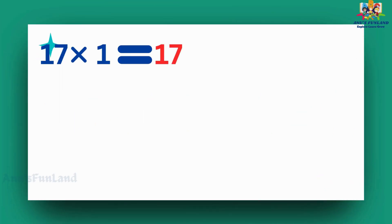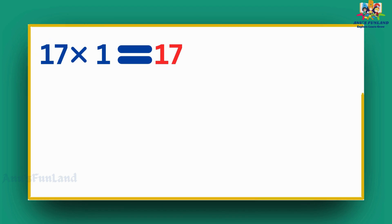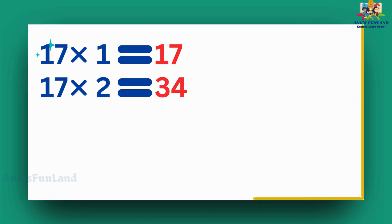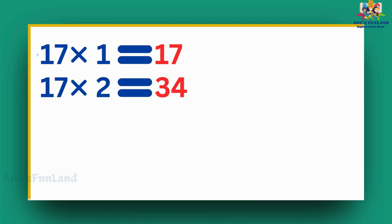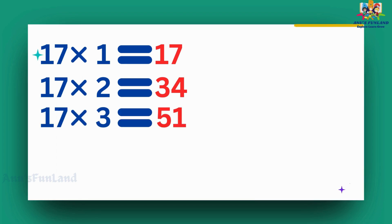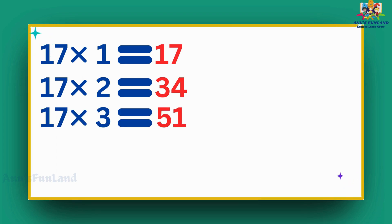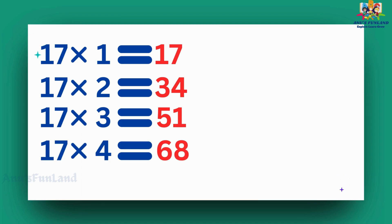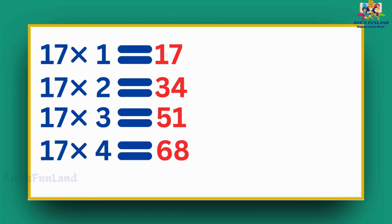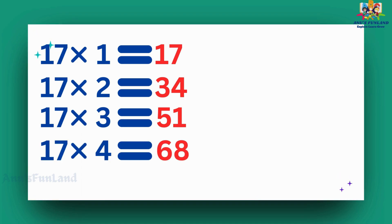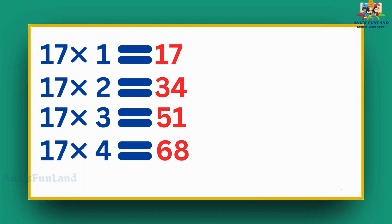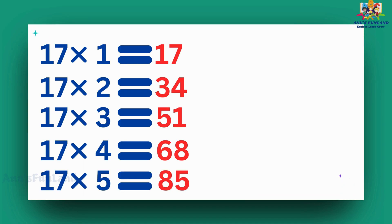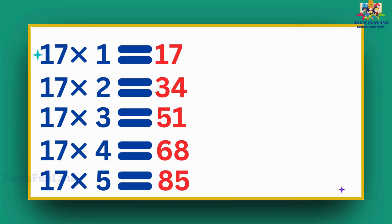17 ones are 17. 17 twos are 34. 17 threes are 51. 17 fours are 68. 17 fives are 85.